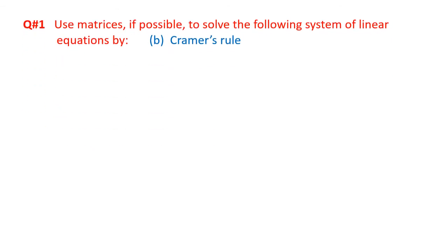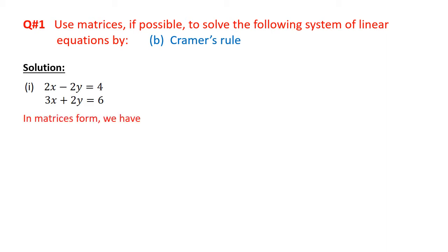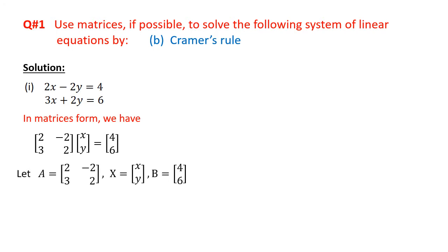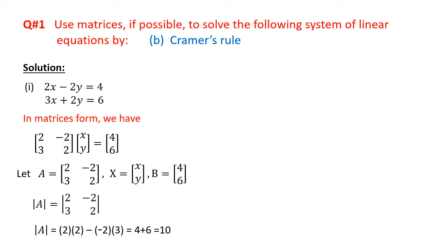Now we will solve question number 1 by Cramer's rule. Here we have two equations. In matrix form, if we multiply the two matrices on the left-hand side and compare corresponding values, we have the same two equations as above. Let A equal to matrix of coefficients, X equal to matrix of variables, and B equal to matrix of constants. Now we will find the determinant of matrix A. By multiplying diagonal entries and subtracting, we have 4 plus 6 equal to 10. As the determinant is not equal to 0, solution is possible.